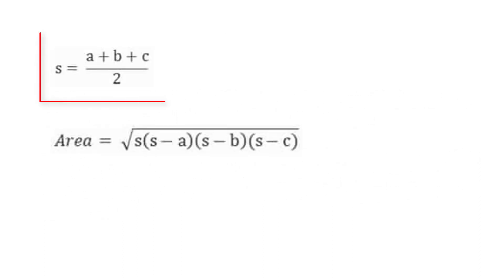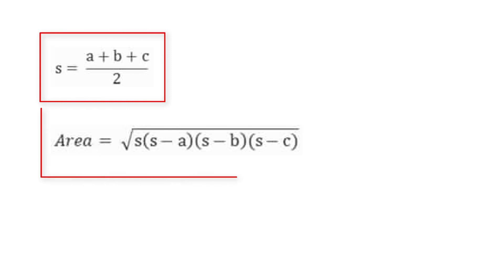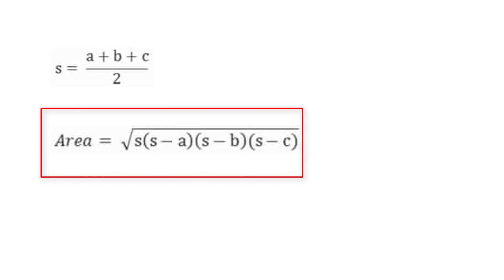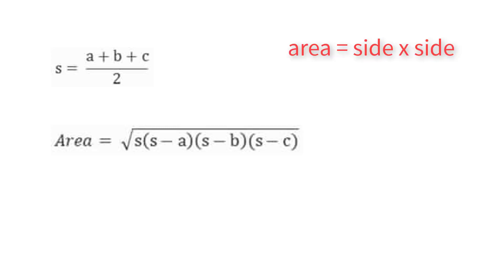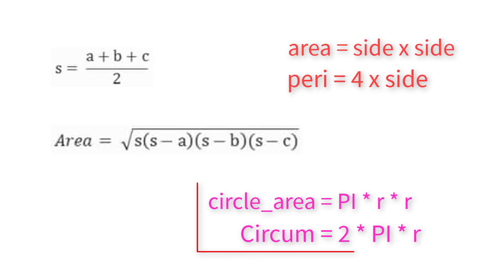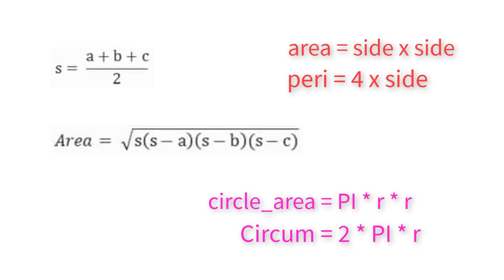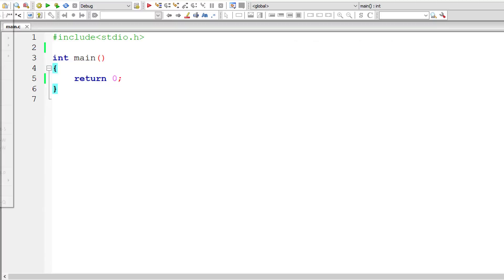Let's look at some of the formulas. This is the formula to calculate semi-perimeter, and this is Heron's formula to calculate area of a triangle. These two things in red are to calculate area and perimeter of a square. And the last two are to calculate area and circumference or perimeter of a circle. Please write these formulas down — we will be using them in our program.